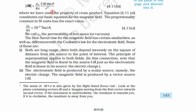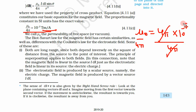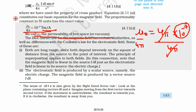The value of μ₀ upon 4π is 10 to the power minus 7 tesla meter per ampere. So μ₀ is 4π into 10 to the power minus 7 tesla meter per ampere. When you divide by 4π, the 4π cancels out, giving simply 10 to the power minus 7. This is the permeability of free space.